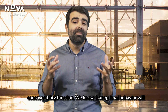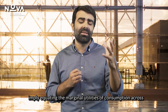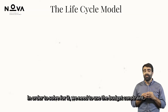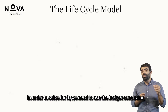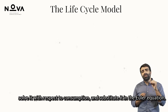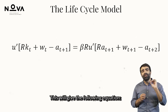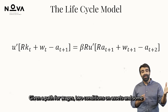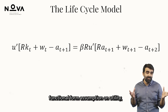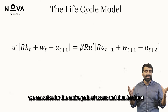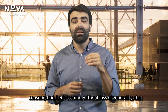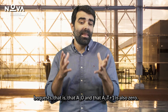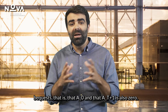We know that optimal behavior will imply equating the marginal utilities of consumption across time, corrected by the product of the subjective and market discount factors — but at what level? In order to solve for it, we need to use the budget constraint, solve it with respect to consumption, and substitute it in the Euler equation. This gives a second-order difference equation in assets. Given a path for wages, two conditions on assets, and some functional form assumption on utility, we can solve for the entire path of assets and then back out consumption. Assume, without loss of generality, that agents enter the labor market with no wealth and leave no bequests — that is, A_0 equals 0 and A_{T+1} also equals 0.